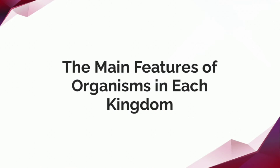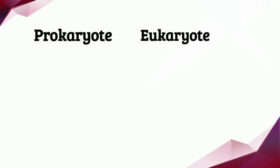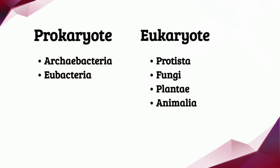Right now, we are going to focus on the main features of organisms in each kingdom. Each kingdom consists of prokaryotes and eukaryotes. Archaebacteria and eubacteria are prokaryote organisms. Meanwhile, Protista, fungi, Plantae, and Animalia are eukaryote organisms.